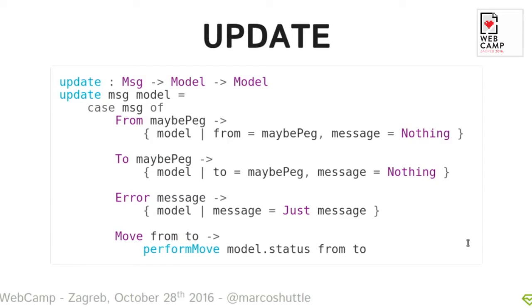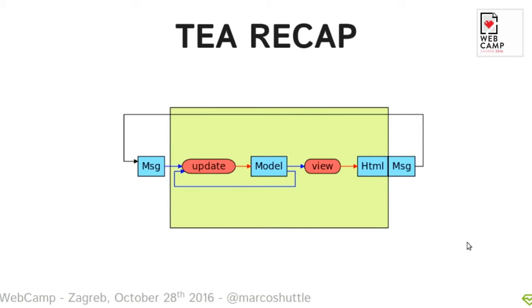The update function takes the message and the current state of the model and returns the new state. For example, taking the error message (the easiest): you take the error message containing a string — the actual string to show the user — and you say the new model is like the previous one, except that the message parameter contains the string received via the message. To recap: the model in the middle gets rendered to HTML by the view function; when the user interacts with the HTML, messages are produced and routed to the update function; the update function produces a new version of the model; and the cycle continues in a unidirectional data flow.